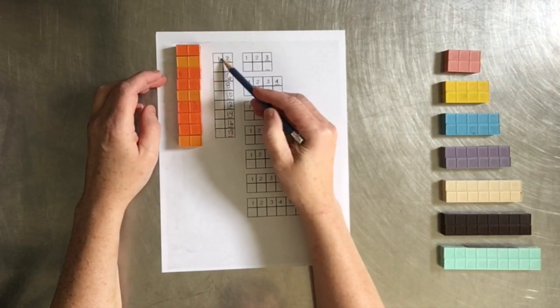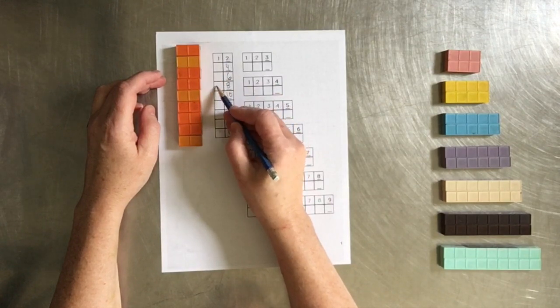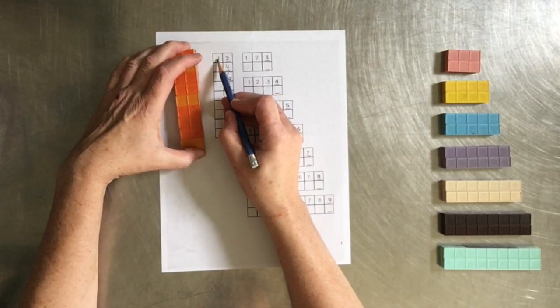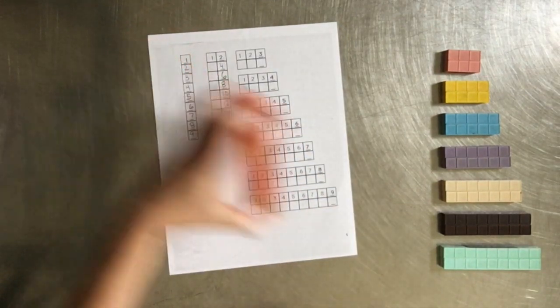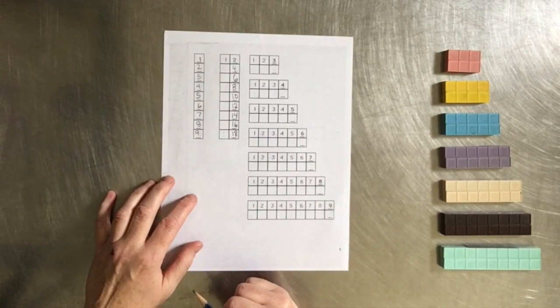You can fill in these if you want. Like you can write in the 3 and the 5 and the 7 if you want. If you want them to practice their counting. 1, 2, 3, 4, 5, 6, 7, 8. Right? So it's really up to you. Depends where your child is.